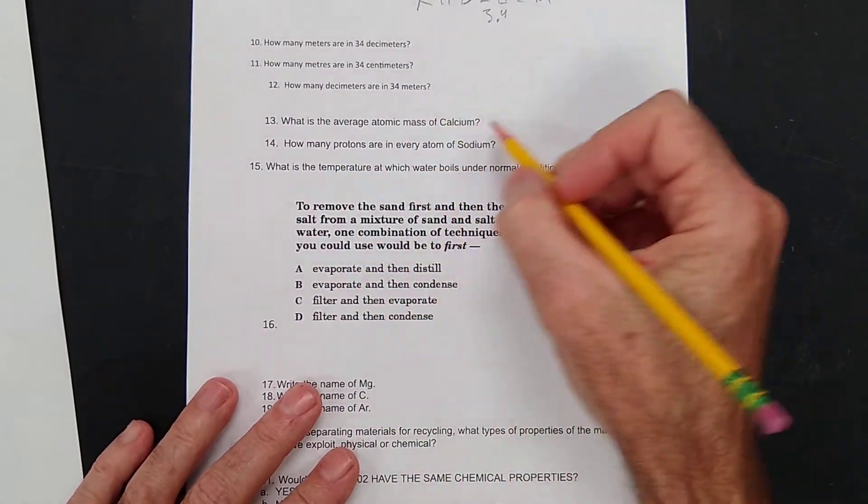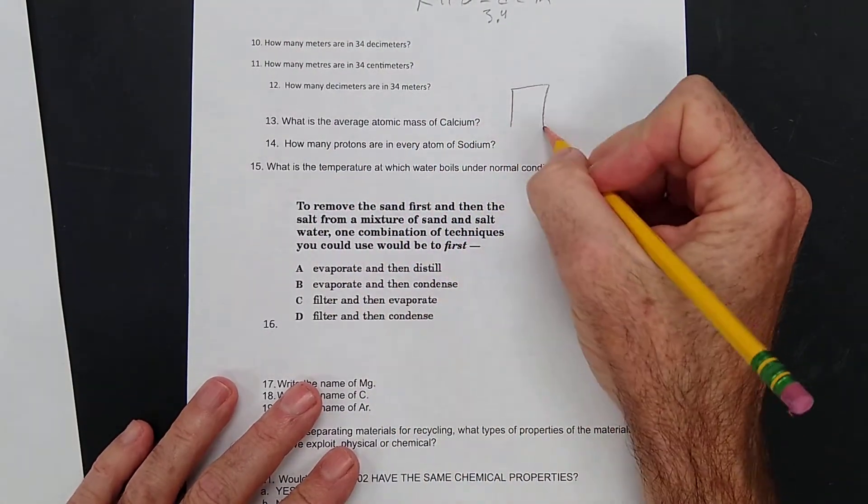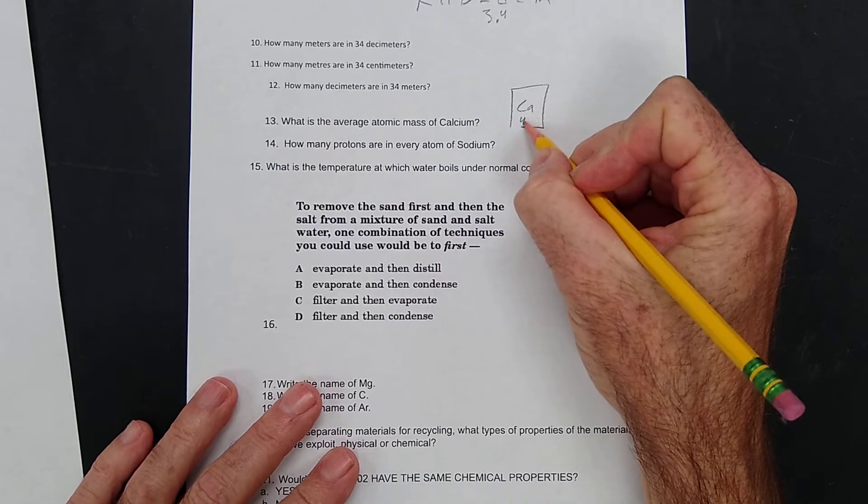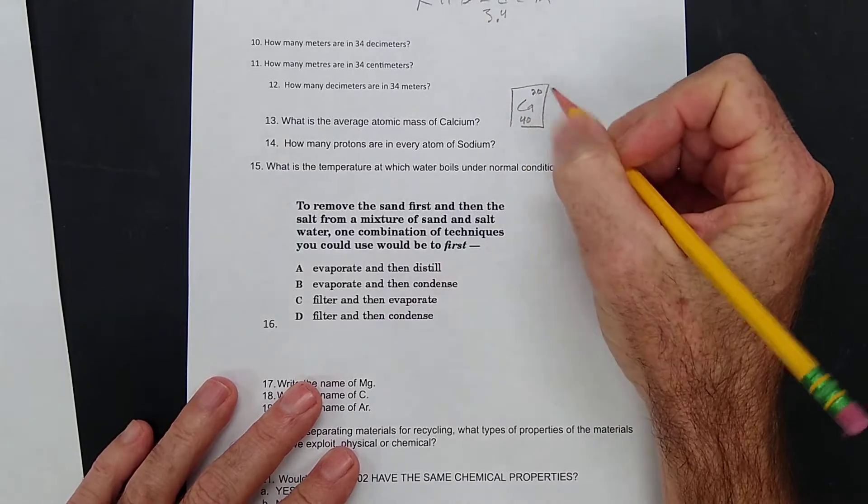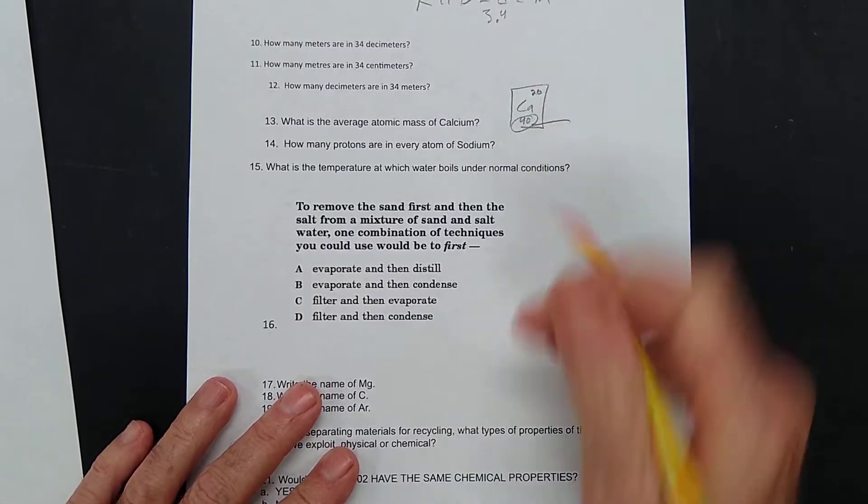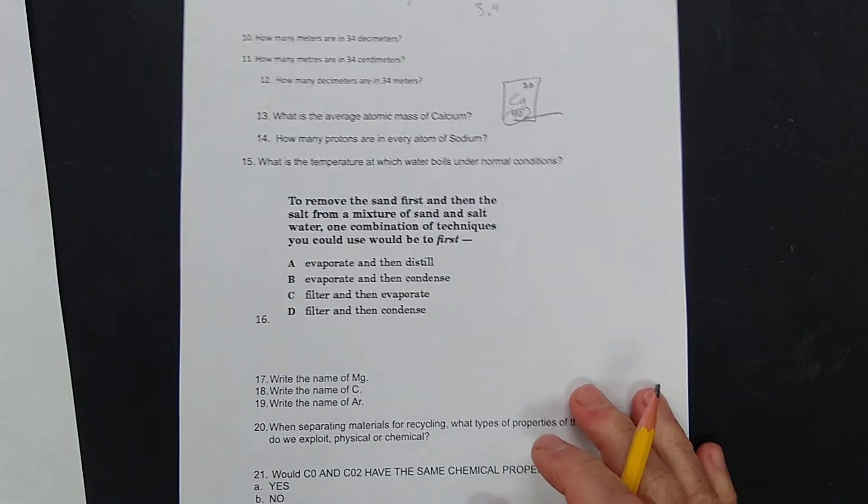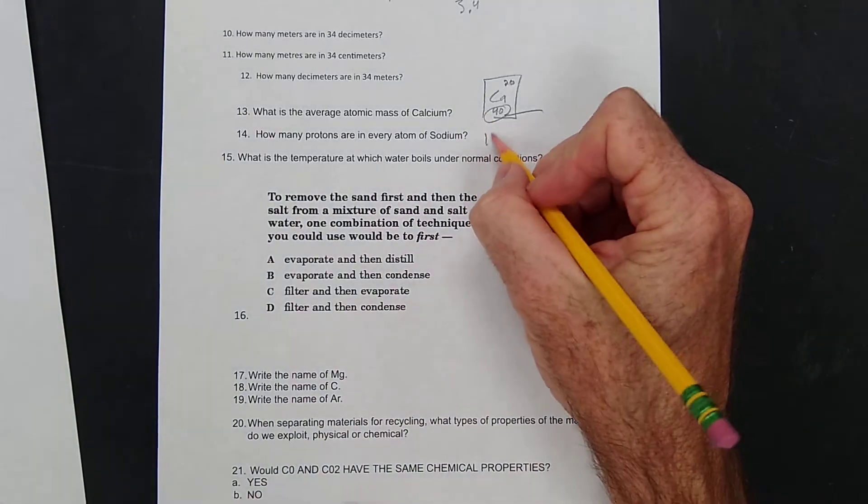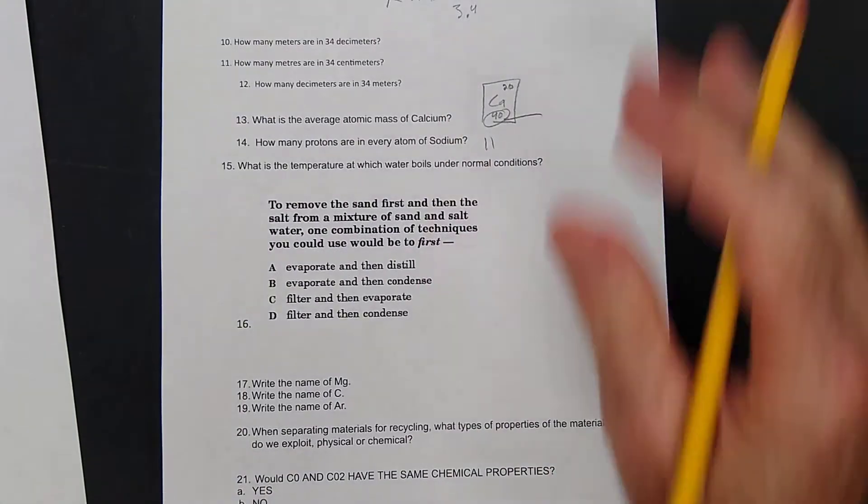Average atomic mass of calcium. You look up calcium. It's going to be 40. That's number 20. I want to figure out a table. So that's the mass right there, average mass. How many protons are in sodium? 11. Look it up on the table.